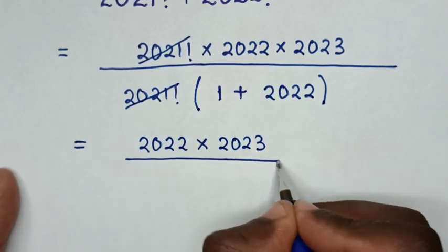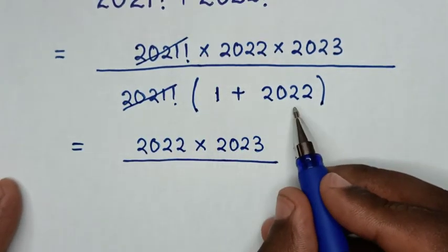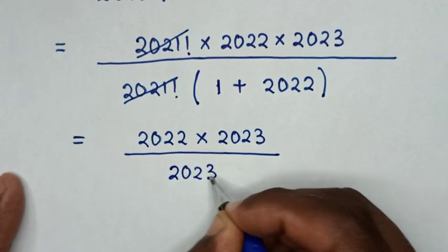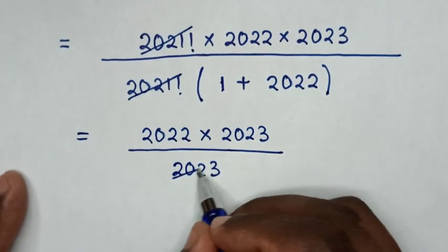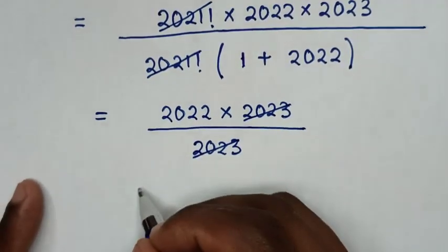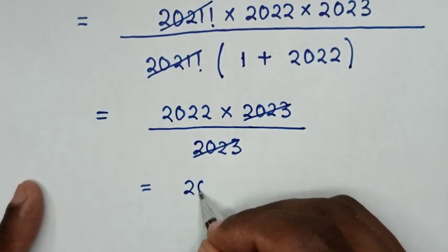Then over - 1 plus 2022 is 2023. In the next step, to simplify, these will cancel. So our final answer will be equal to 2022.